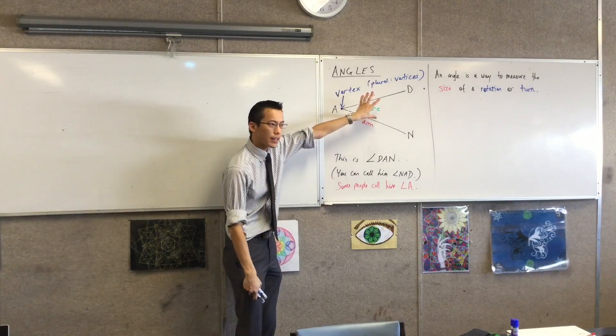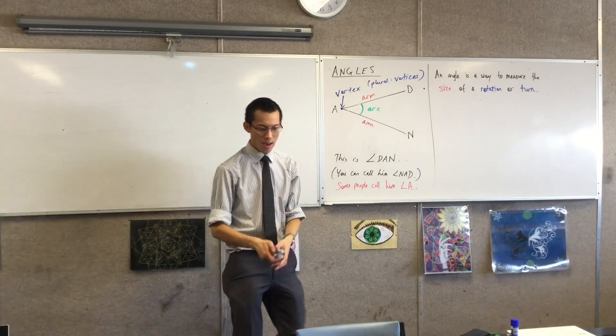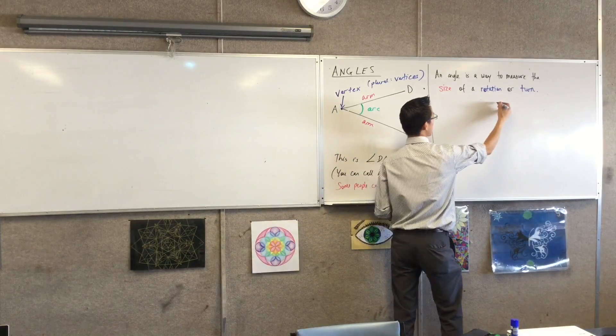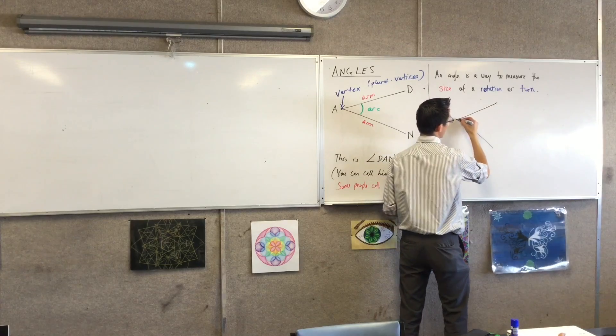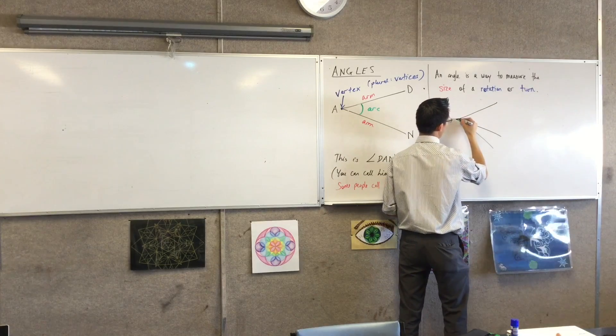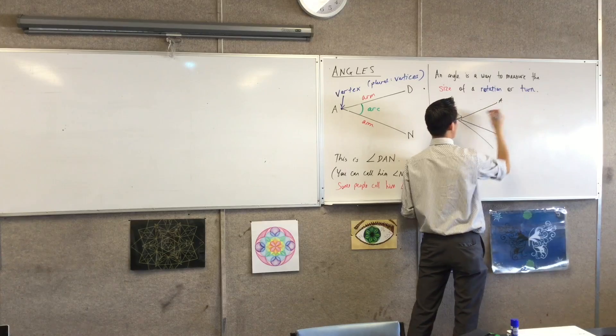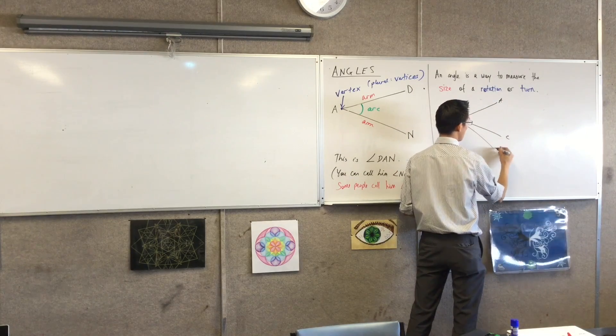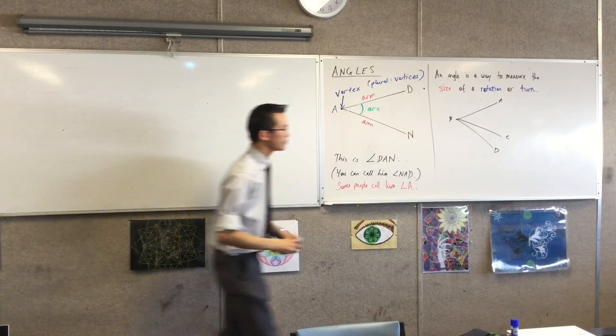If you draw another one of these, you can draw it maybe a bit smaller underneath, but I want it to have more than one angle. So draw something like this. Let's call this A, B, C.